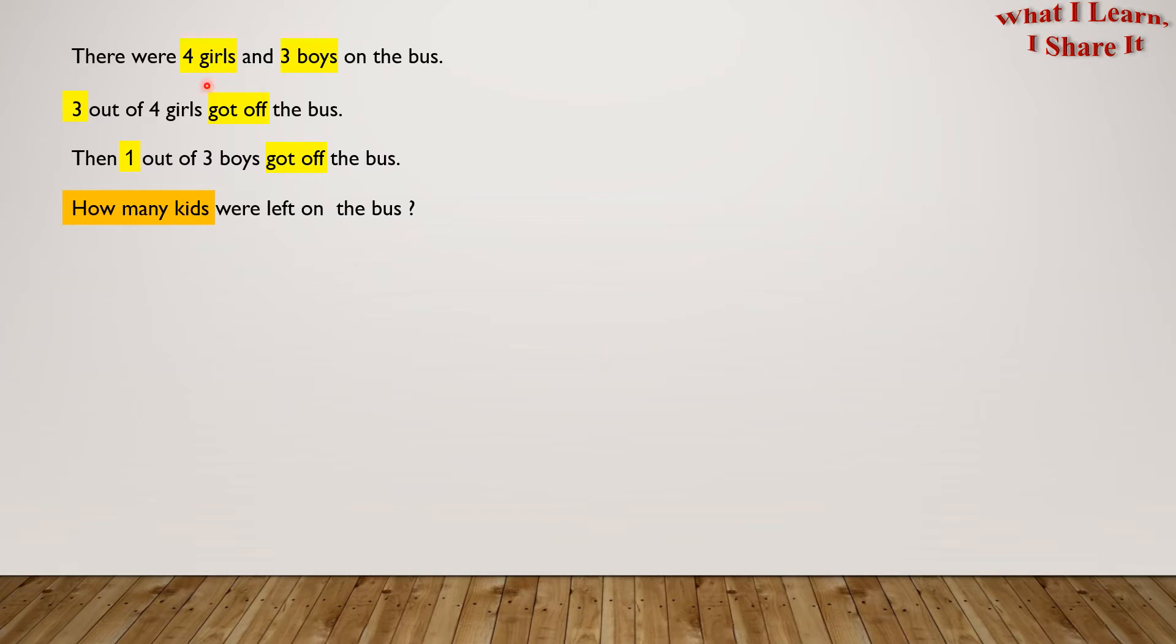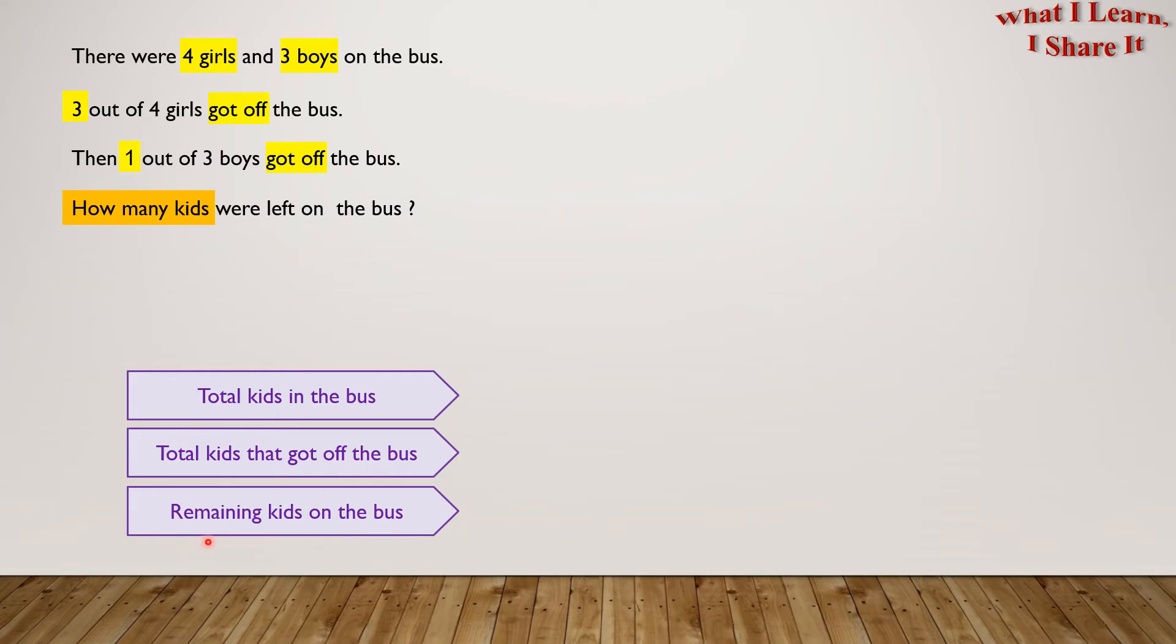To find the children we have to take both boys and girls together. So here's our plan. First we'll find the total kids in the bus. Then we will find out the total kids that got off the bus. Then we will find the kids remaining on the bus.